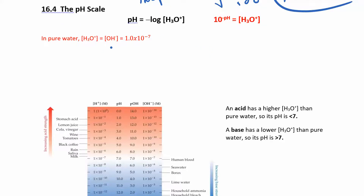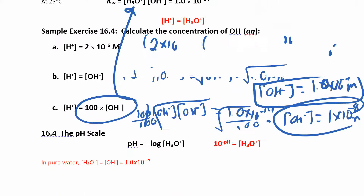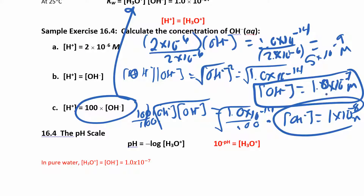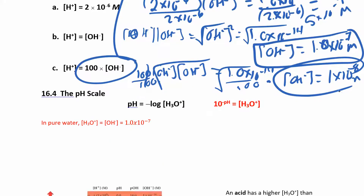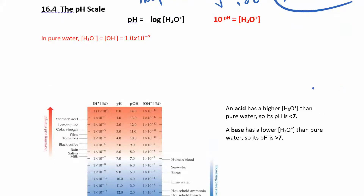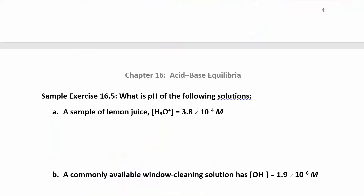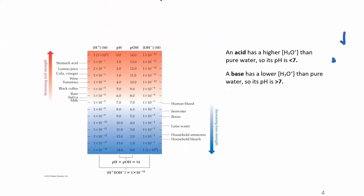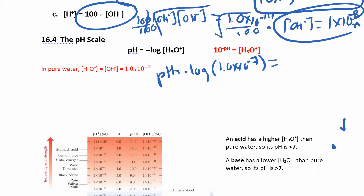In pure water, hydronium equals hydroxide, and as figured out in the problem above, the concentration of hydroxide or hydronium ions is 1 × 10⁻⁷. So if you had pure water, this is neutral pH. I would find that pH by saying pH equals negative log of the hydronium. So for 1.0 × 10⁻⁷, when you work that out in your calculator, you'd see that it is 7.00.